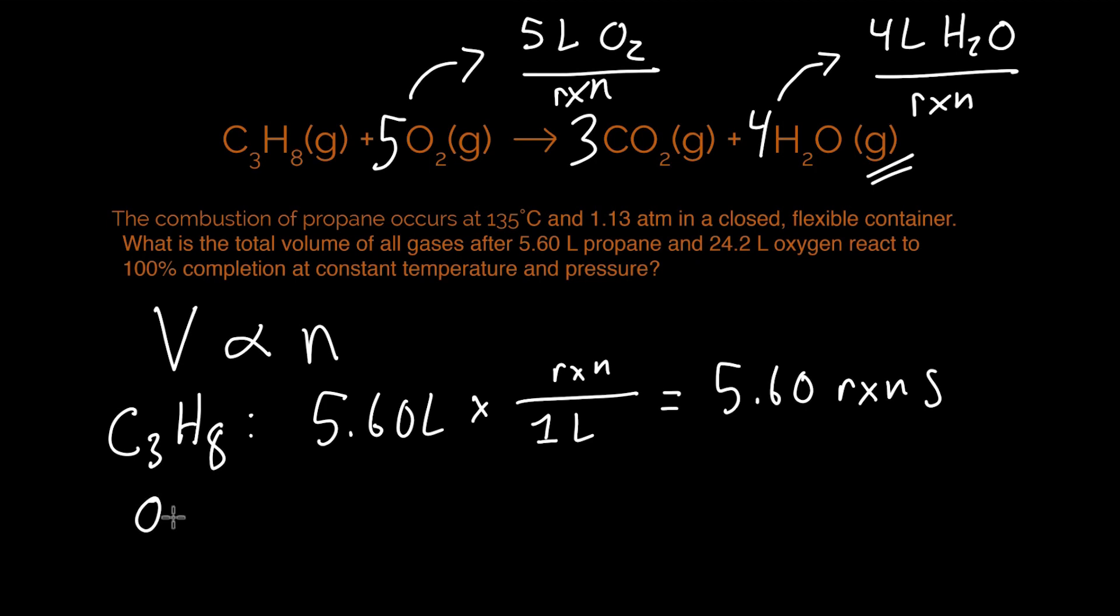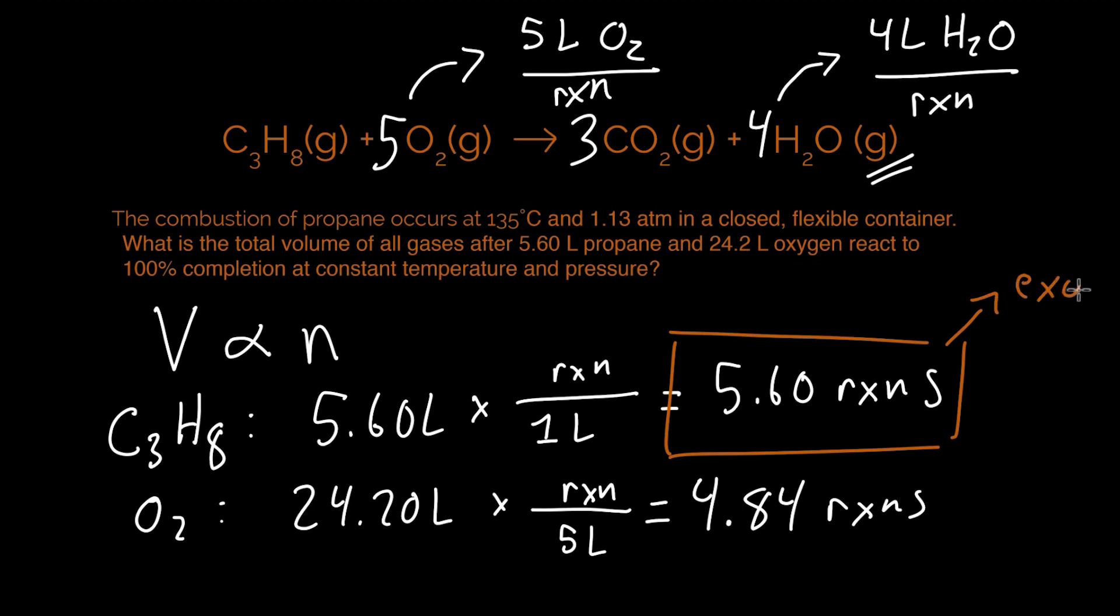For our oxygen, we have 24.2 liters, and it takes 5 liters per reaction. That's our recipe. And so what we can do with this amount of oxygen is run 4.84 reactions. And so if we analyze the numbers we got here, we definitely see that we can run plenty of reactions with the propane. That makes this in excess, and our oxygen is going to run out first because we can run the fewer amount of reactions. So that makes this the limiting reagent.